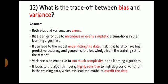Next question: what is the trade-off between bias and variance? These are two different important terms in machine learning. Both bias and variance are errors. Bias is an error due to enormous or overlaid simplifying assumption in the learning algorithm. It can lead to the model under-fitting the data, making it hard to have high predictive accuracy and generalize the knowledge from the training set to the test set. Variance is an error due to too much complexity in the learning algorithm. It leads to the algorithm being sensitive to high degree of variation in the training data, which can lead the model to overfit the data.